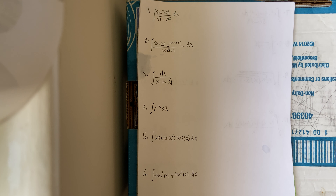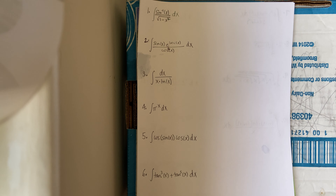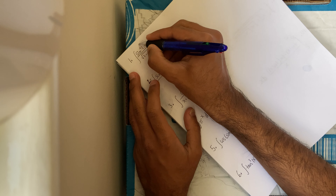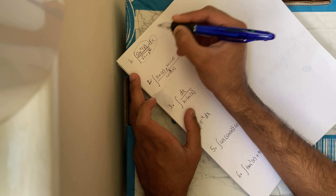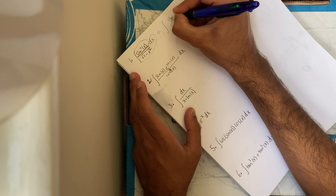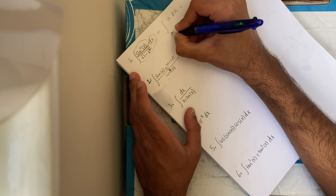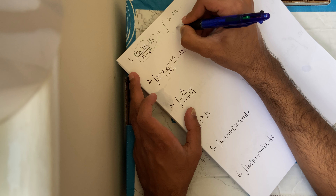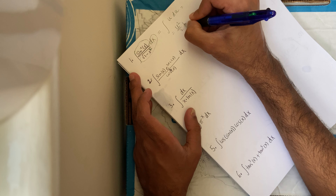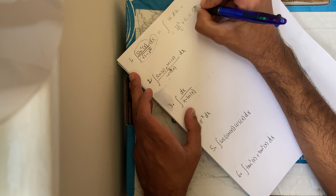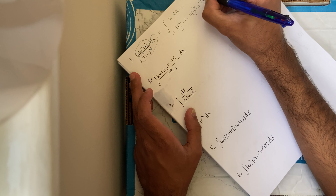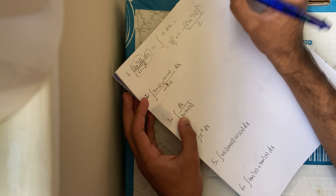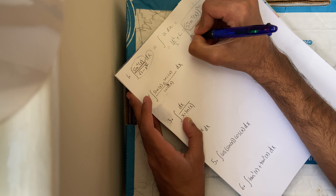So the first one is the integral of arcsin of x over 1 minus x squared. It's a pretty simple, straightforward one. I can straight away do a u-substitution, because I see the arcsin there and the derivative of it right there. So that is the integral of u du, which is u squared over 2 plus c, which is the inverse sine of x, squared over 2 plus c. That's all for the first one.